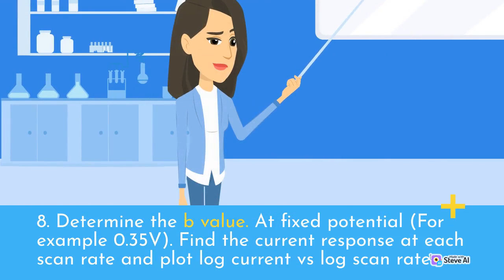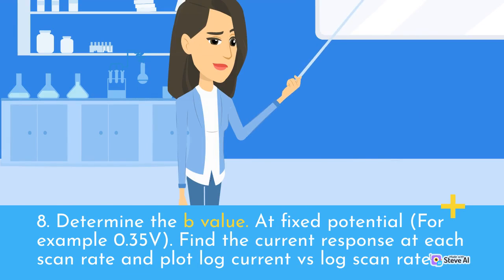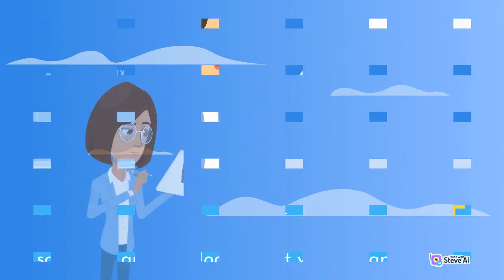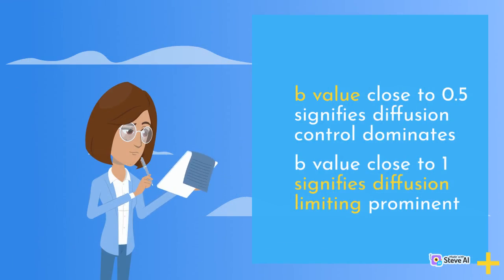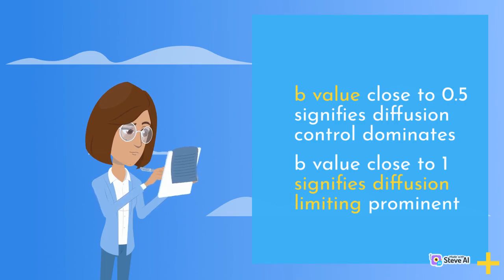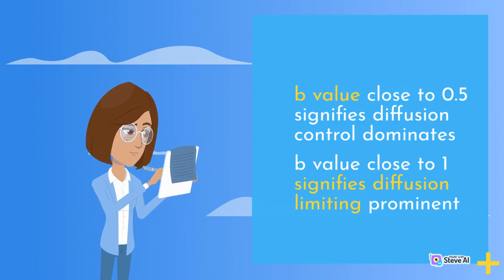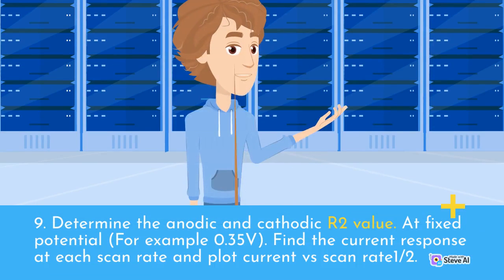At a fixed potential, for example 0.35 V, find the current response at each scan rate and plot log current versus log scan rate. A b-value close to 0.5 signifies diffusion control dominates, while a b-value close to 1 signifies capacitive behavior is prominent.